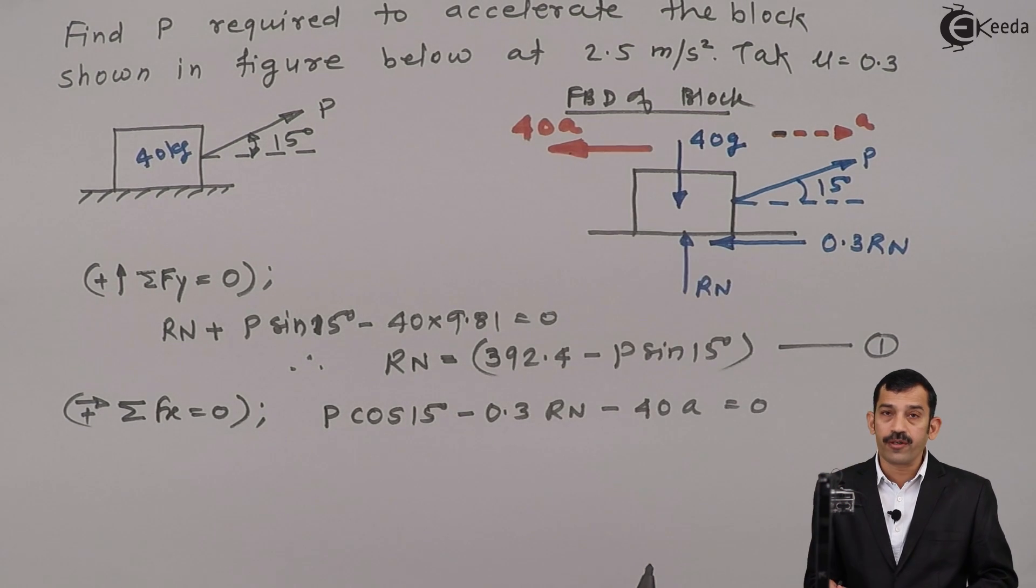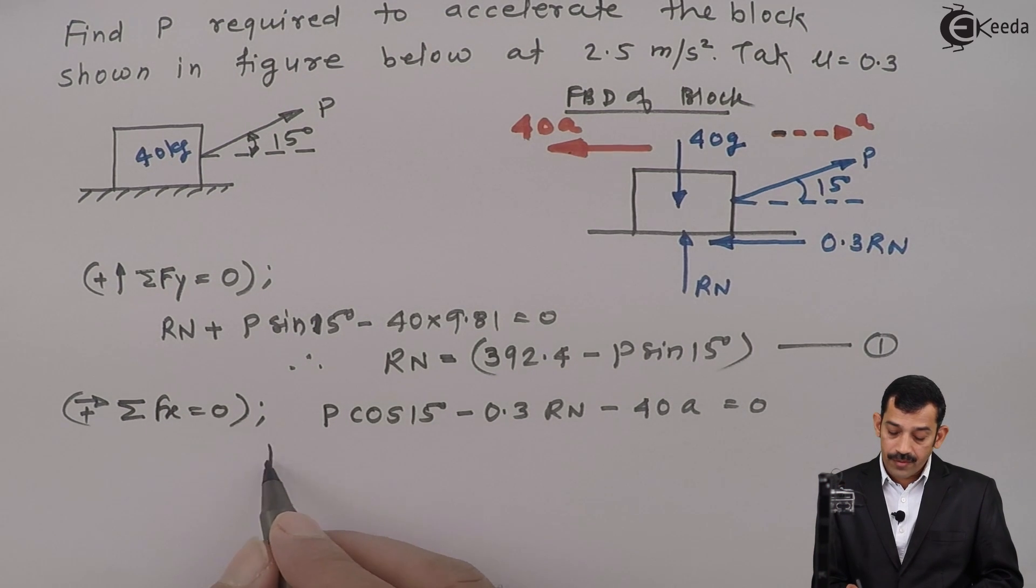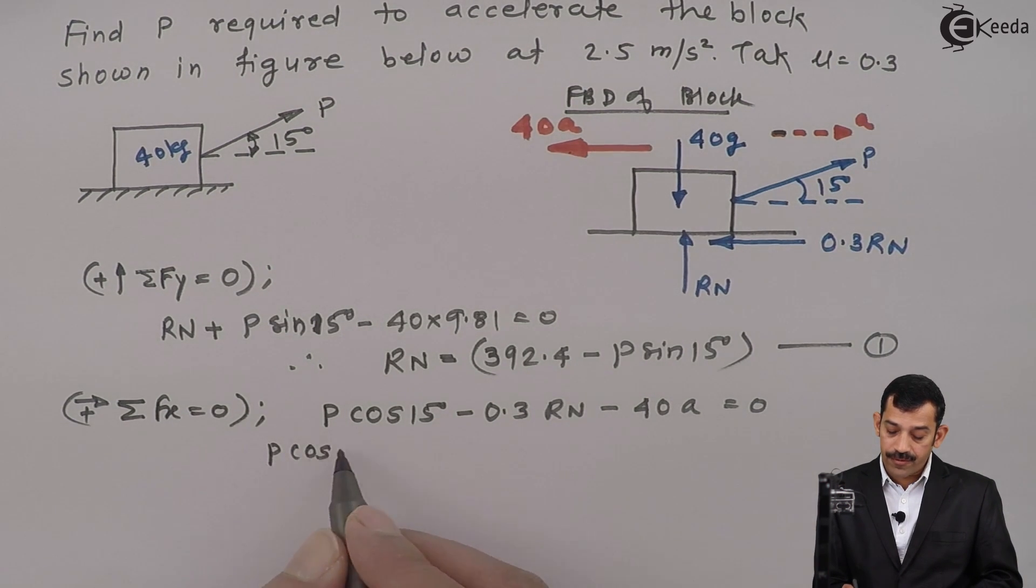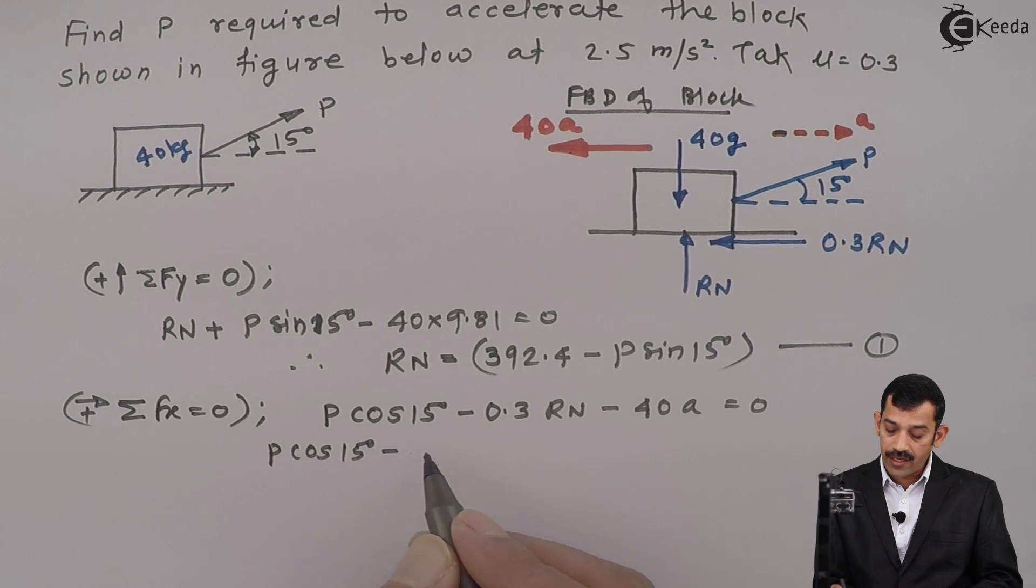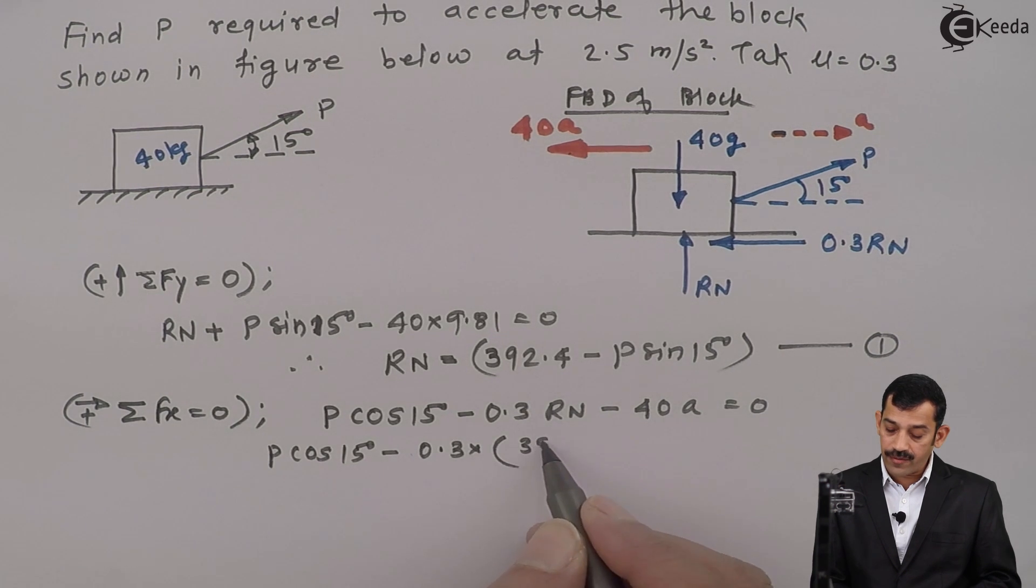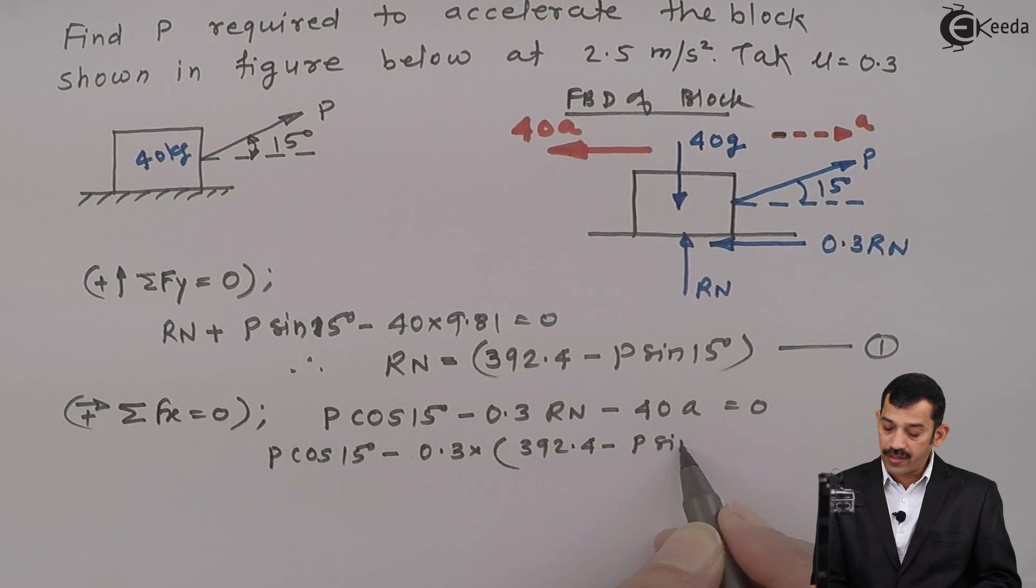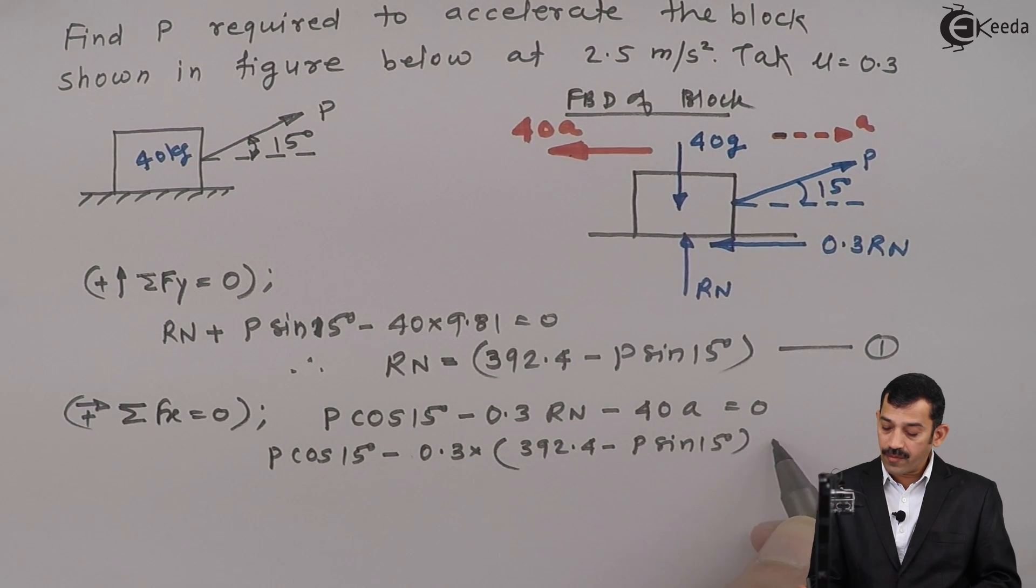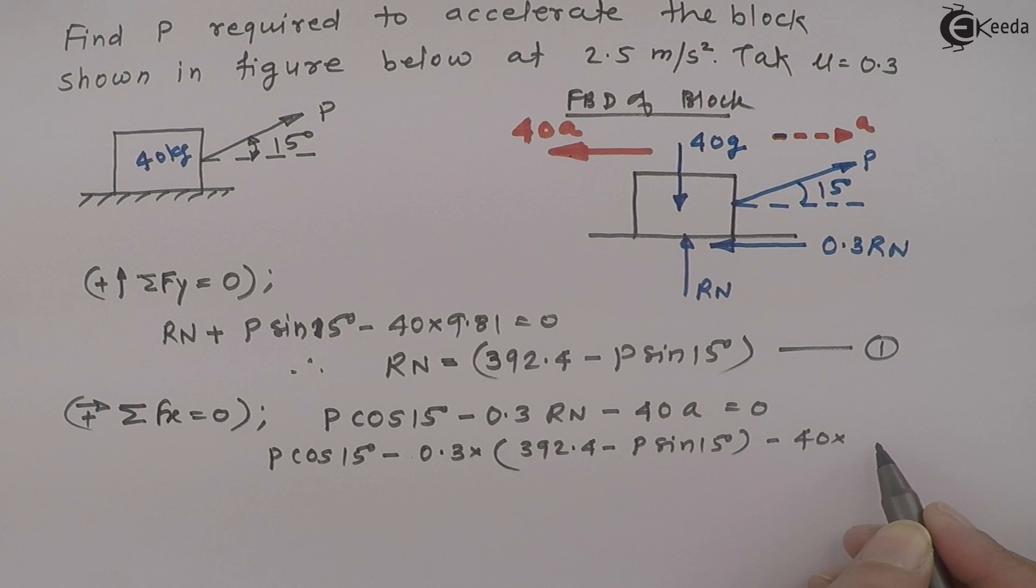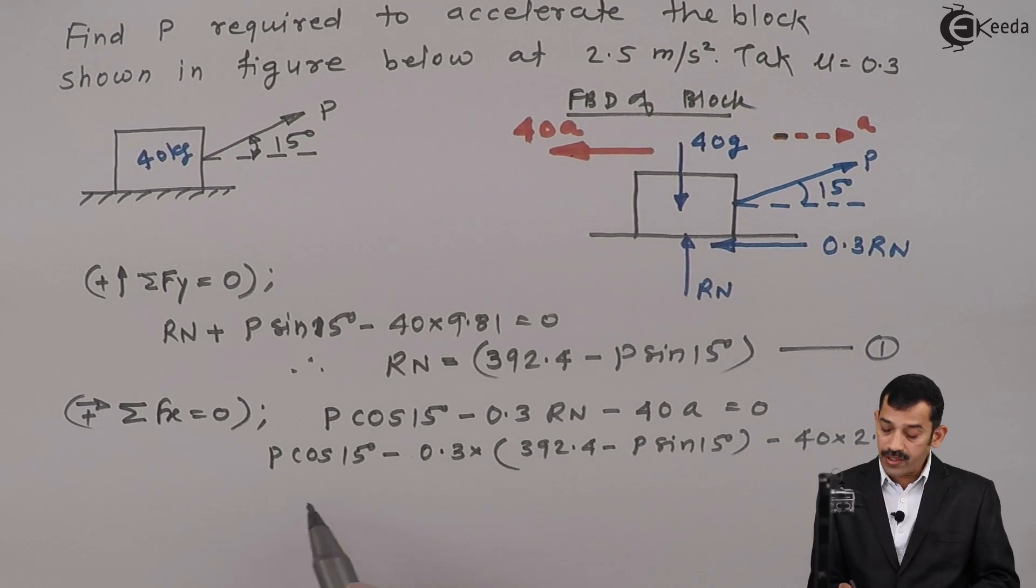Now A is given in the problem, that is 2.5 meter per second square. We will substitute in the next step. P cos 15 minus 0.3 Rn value - I will substitute from equation number 1: 392.4 minus P sin 15 minus 40 into acceleration is 2.5, which equals 0.